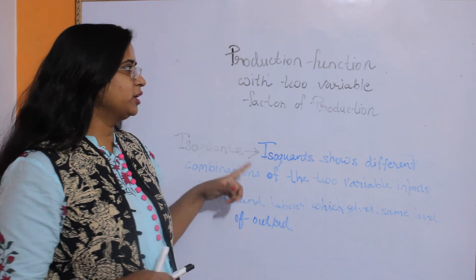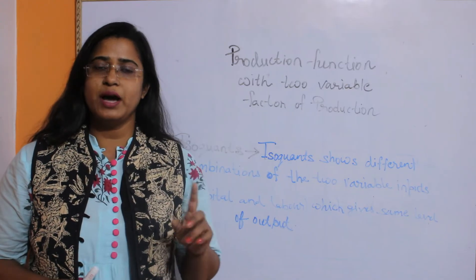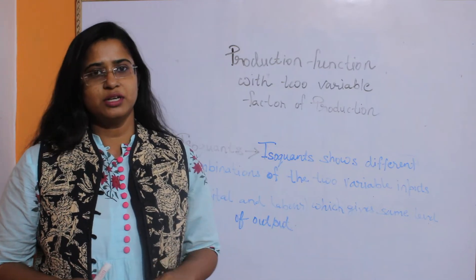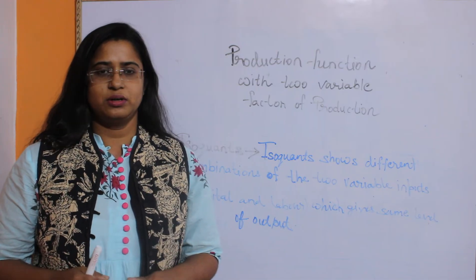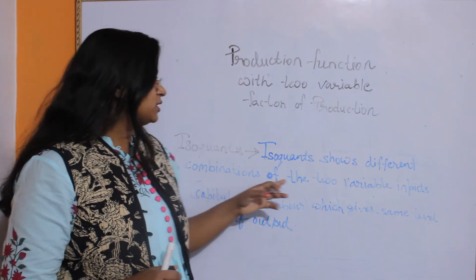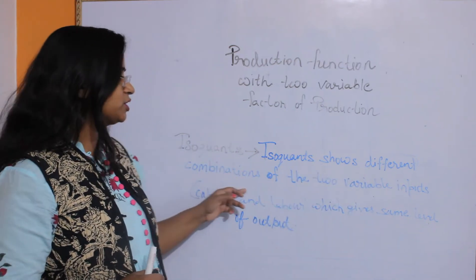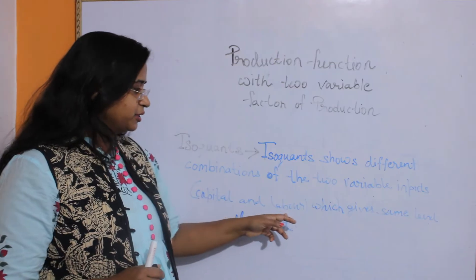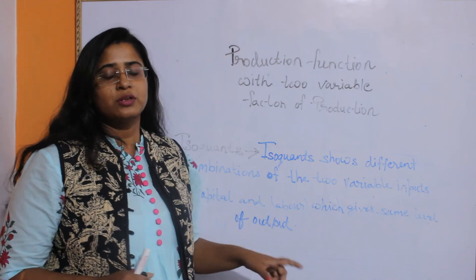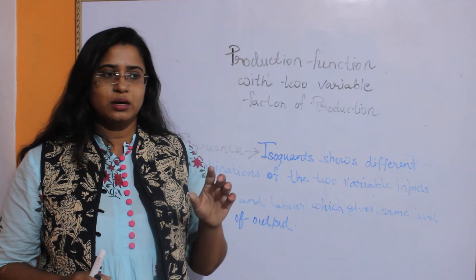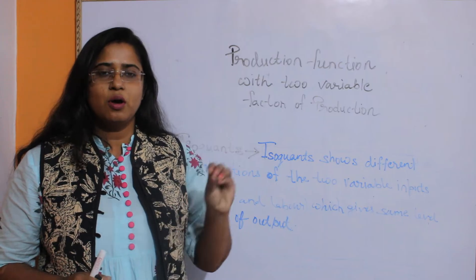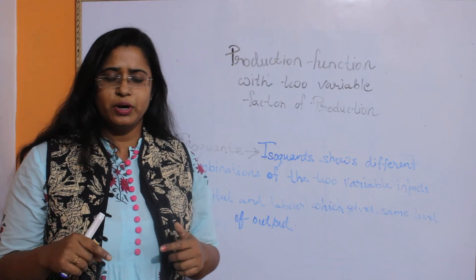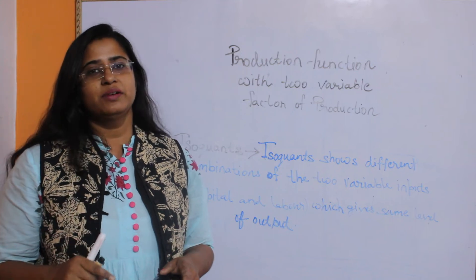The production function with two variable factors of production uses the concept of isocons. The isocons are very much similar to the indifference curve which you study in consumer analysis. Isocons shows different combinations of the two variable inputs, and in most cases we take capital and labor, which gives the same level of output.